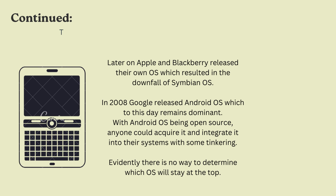Later, RIM BlackBerry and Apple operating systems were introduced, which dominated the market and resulted in the downfall of Symbian. Nokia, understanding that Symbian had no future, decided to ditch it and started working on Windows operating system. In 2008, Google introduced Android. Android is open source — it is available for everyone if they want to make changes and integrate it into their own technology. However, in terms of operating systems, we can never say for sure which one will remain dominant.